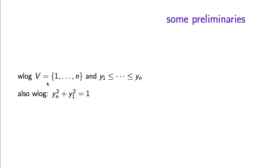We assume that the set of vertices is labeled 1 through n, with the vertices already sorted according to y. That's just a matter of renaming the vertices — it's without loss of generality. We also multiply every entry of y by some fixed constant so that the first entry squared and the last entry squared sum up to 1.